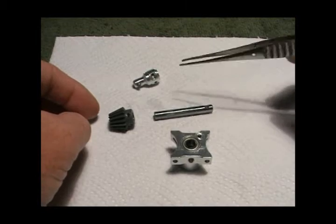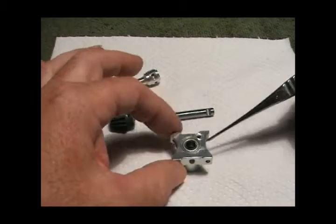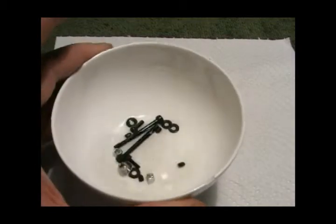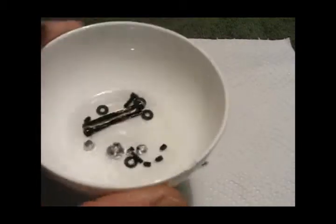In there we've got our bevel gear and shaft, the bearing block, and the coupler for the torque tube, and assorted fastenings which we're just degreasing now.